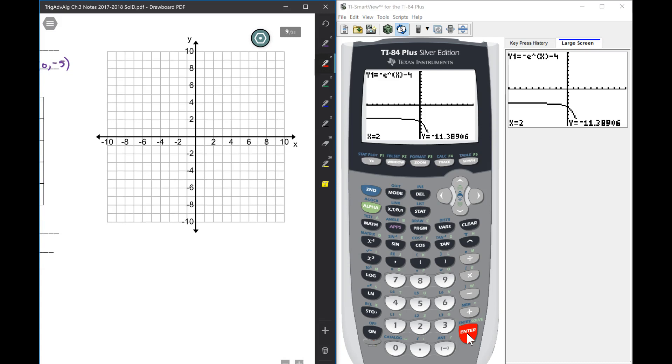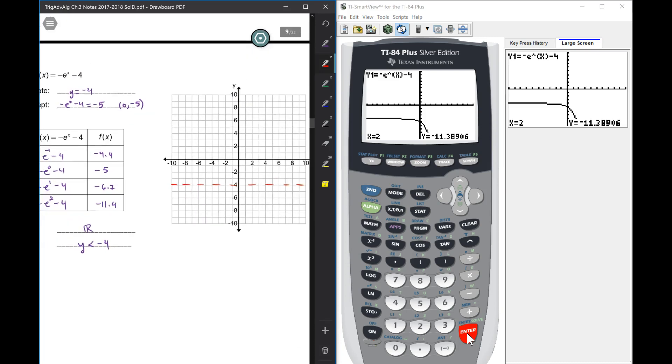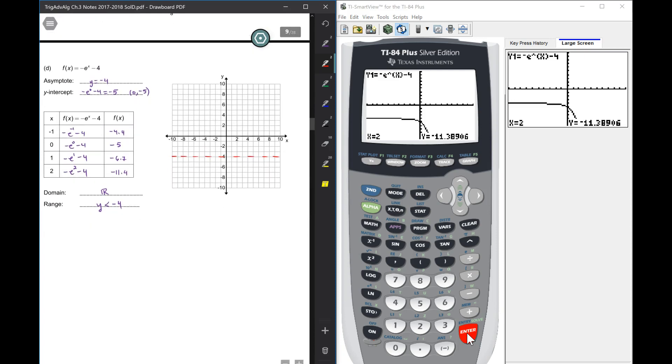At negative 4, we have an asymptote. And then I've got these points, so at negative 1, and then at negative 5, and then negative 6.7, and then it's like 11 something. Now, let me show you something else.